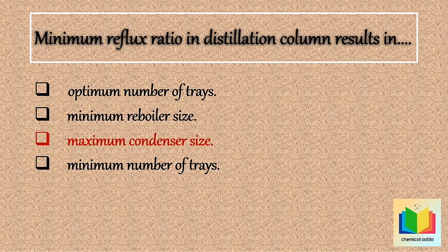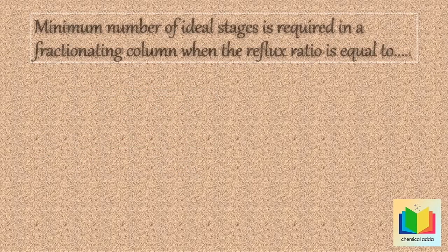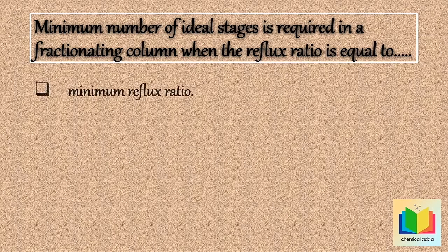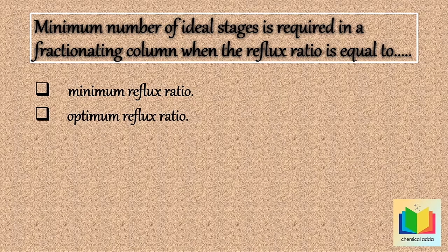Now next question: The minimum number of ideal stages required in a fractionating column is when the reflux ratio is equal to: minimum reflux ratio; optimum reflux ratio; zero; or infinity. Your time starts now.